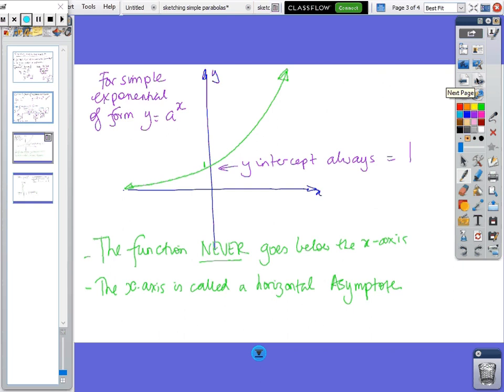So for this simple parabola, we just had a look at that shape. So the y-intercept is always equal to 0 because anything to the 0 always equals 1. So the y-intercept is always equal to 1.